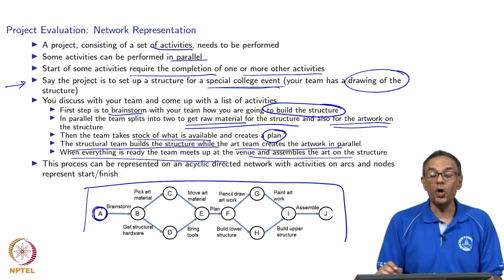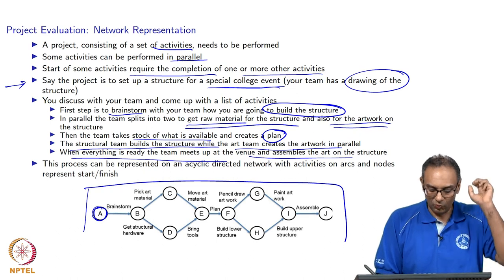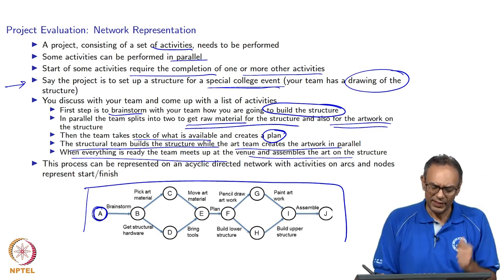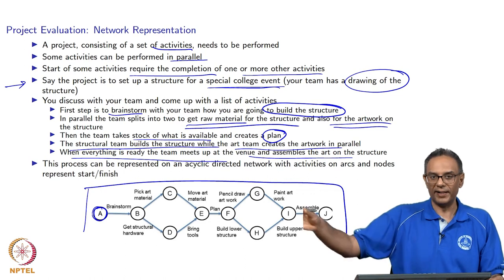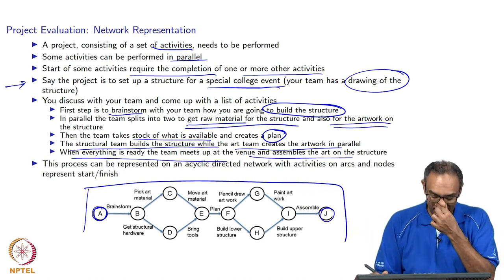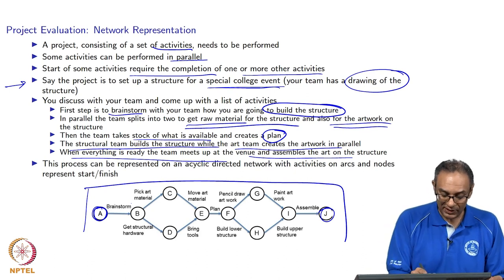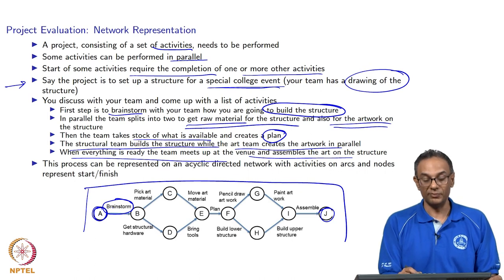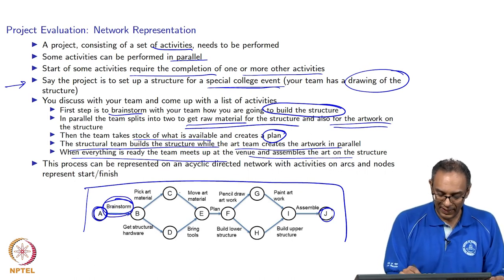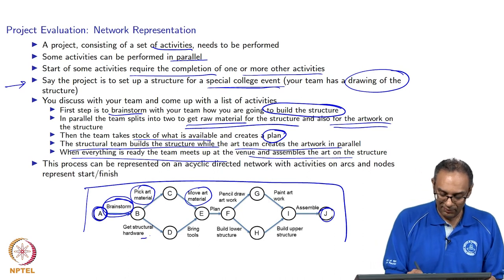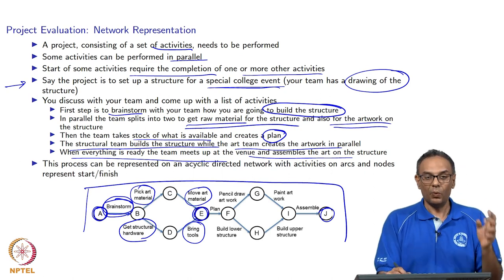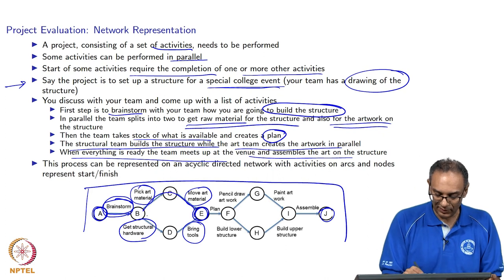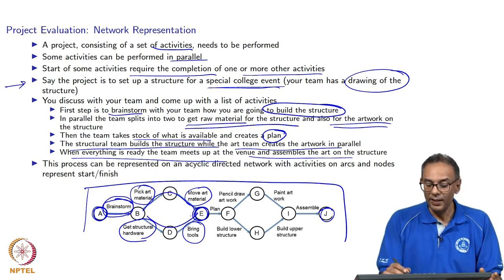You start with node A. The nodes and letters in the nodes just denote when an activity starts and when it ends. This network goes in one direction — you start at A and end at J — going through multiple arcs, where each arc represents an activity. The first activity is to brainstorm, which requires all team members. Then the art team picks art material and moves it to the discussion location. Similarly, the structural hardware and tools are brought together.